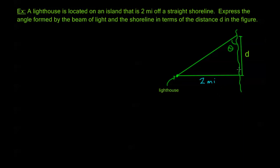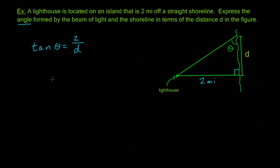Looking at this setup, if theta is our angle and we go straight from the lighthouse to the shoreline, that forms a right angle. With respect to angle theta, we have an adjacent side and an opposite side, so we know we're going to be using tangent. Tangent of theta equals the opposite side, which is 2, over the adjacent side, which is d. The question asks us to express the angle in terms of d, so we need theta on the left and an algebraic expression containing d on the right. Taking tangent inverse of both sides: tangent inverse of tangent theta equals tangent inverse of 2 over d.